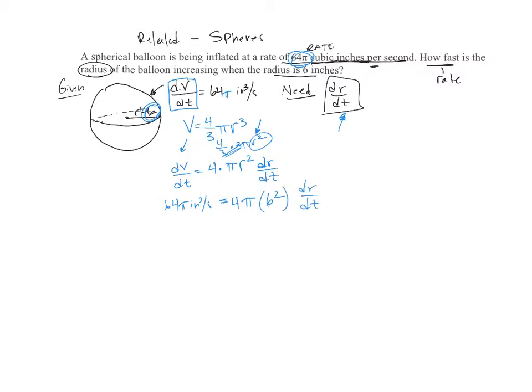So I can go through now and solve for my dr/dt. That's what I'm looking for. So over here the pi's will reduce out. This is 6 inches and square, it'll be 6 inches squared, so the inches over here, the units will end up just being inches per second when I'm done. So you end up with 64 equals 36 times the 4, and then the dr/dt.